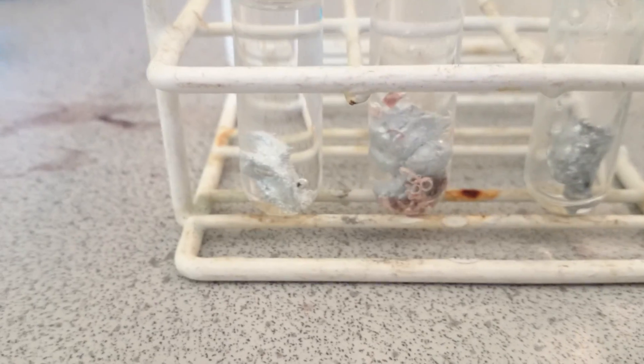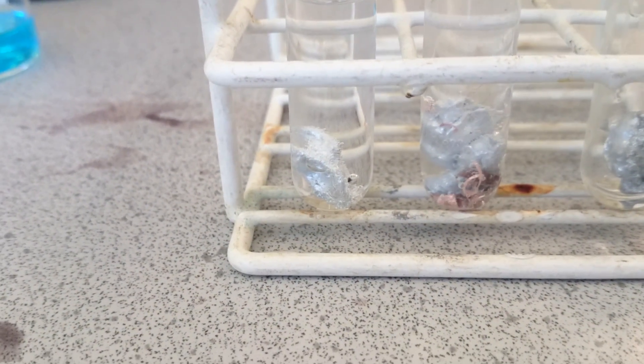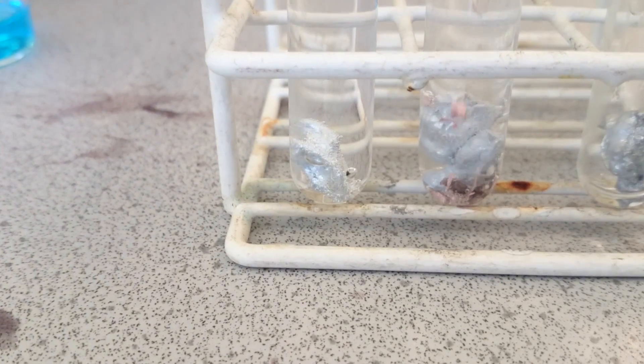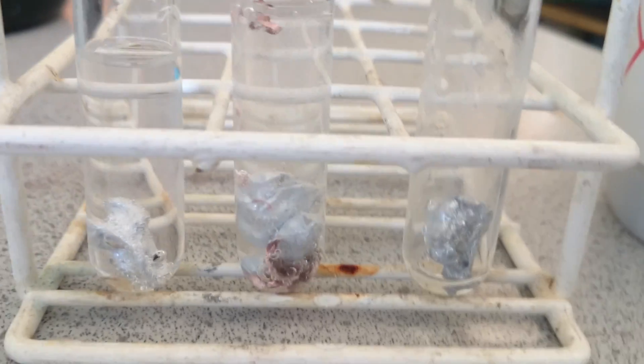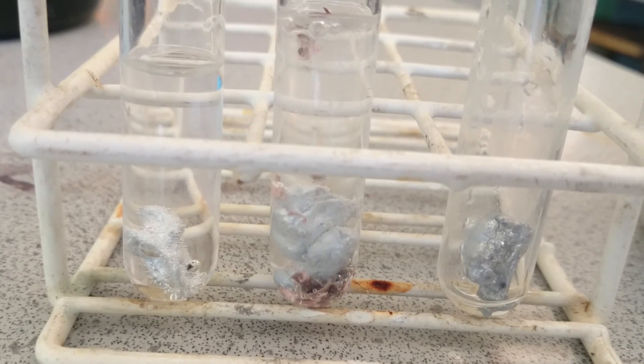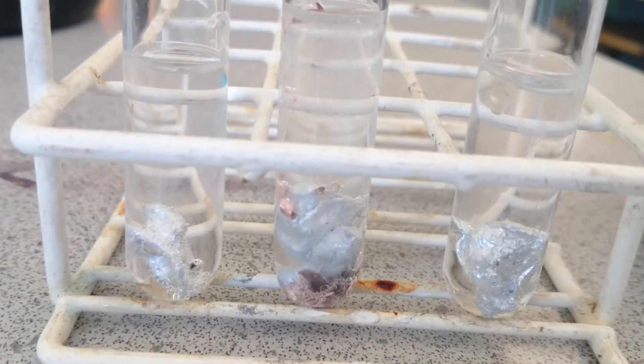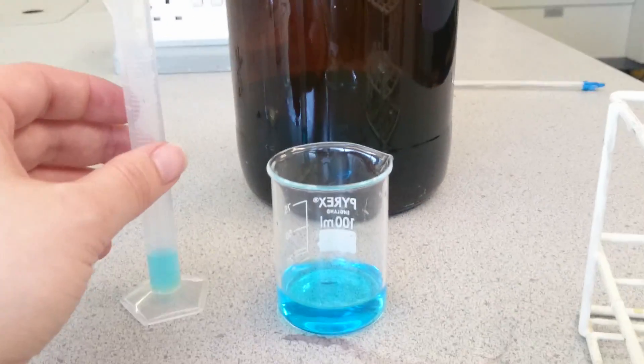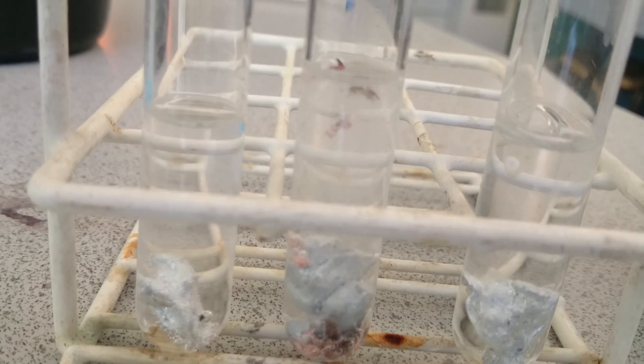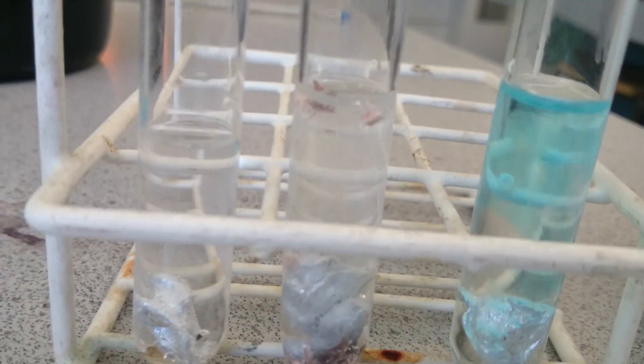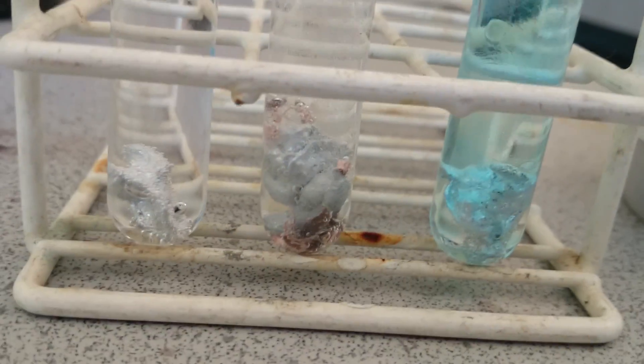For the last one, we're going to add another five centimetres cubed of sulfuric acid, just like tube one initially. Then we're also going to add a small amount, just one centimetre cubed of copper sulfate solution. This one will need a little mix.